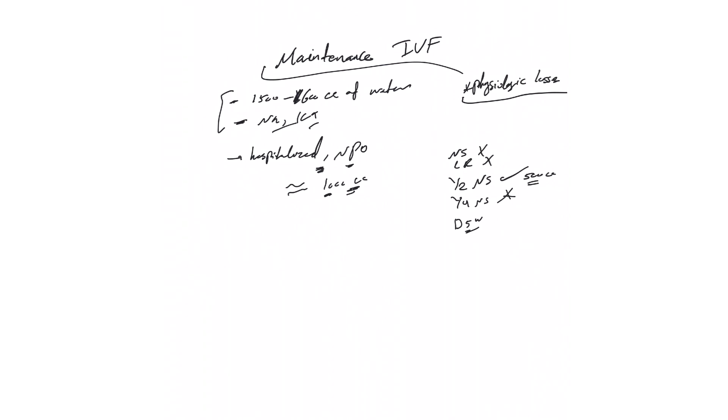That's how they came up with the magic solution that probably most of you know. Let's give D5W that will give you calories, half NS that will give you free water, plus 20 milliequivalents of potassium that will give you the potassium.